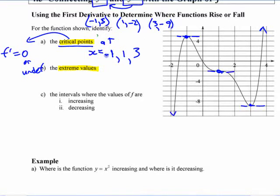All of those things are not extreme values. The extreme values occur at critical points, but not every critical point is an extreme value. It's kind of a one-way relationship. This is an extreme value. This is an extreme value. It's a local extreme.